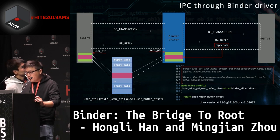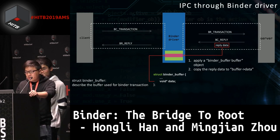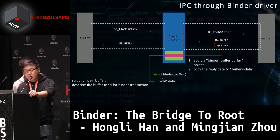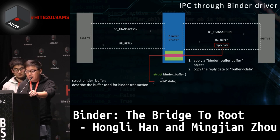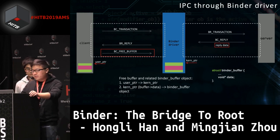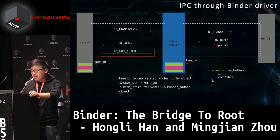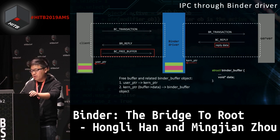The client maps the memory to its own address space and accesses it with a user pointer. The driver accesses the memory with a kernel pointer. There is a mapping between the kernel pointer and the user pointer. The driver uses the struct BinderBuffer to describe the buffer used for a transaction. When the client sends the BinderBuffer user pointer to the driver, the driver maps the user pointer to the kernel pointer, finds the BinderBuffer object related to the kernel pointer, and then frees the buffer under the BinderBuffer object.